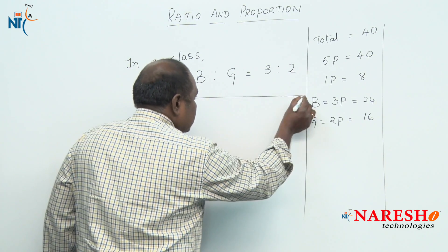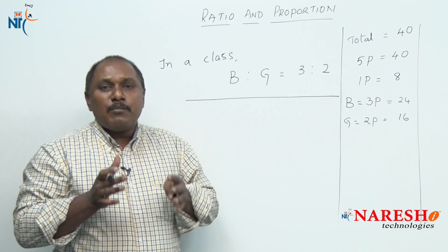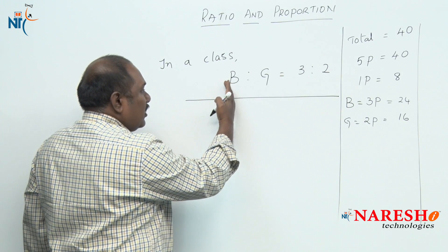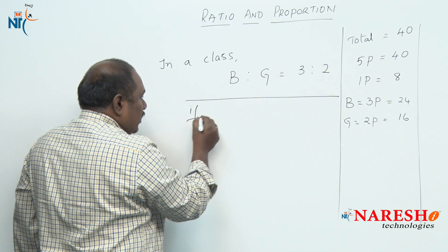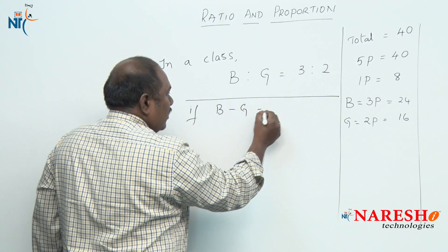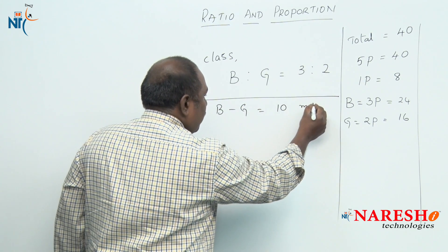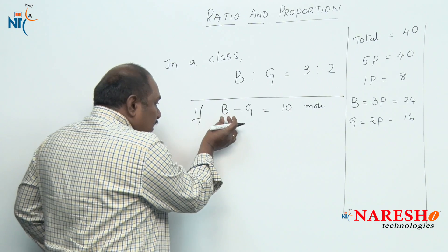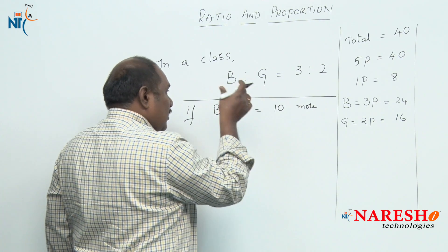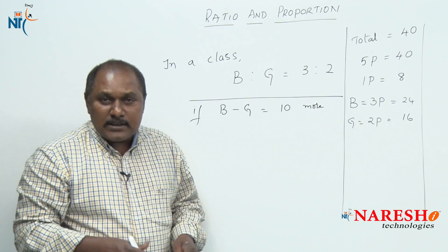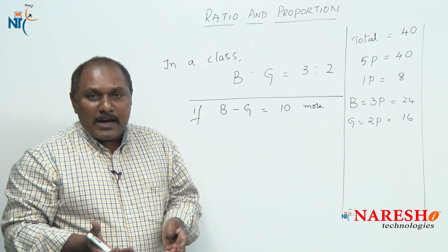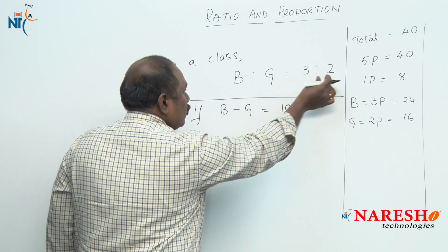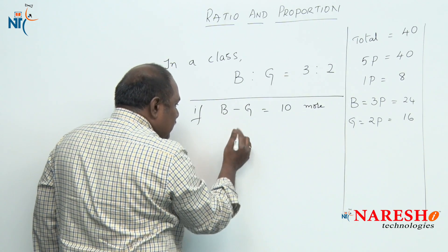We can also be given other information — such as the difference in the number of boys and girls. In a class, boys and girls are in the ratio of 3 is to 2. If the number of boys are 10 more than the number of girls, that is, the difference in the number of boys and girls is 10. Boys are 3 parts, girls are 2 parts, so the difference is 1 part.